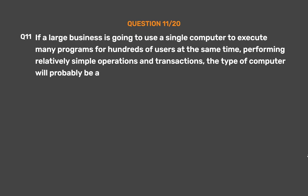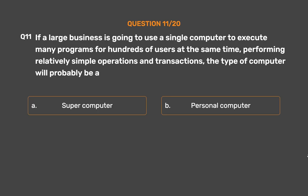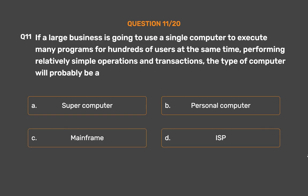Question number 11. If a large business is going to use a single computer to execute many programs for hundreds of users at the same time, performing relatively simple operations and transactions, the type of computer will probably be. Option A: Supercomputer. Option B: Personal Computer. Option C: Mainframe. Option D: ISP.